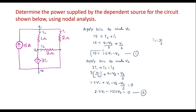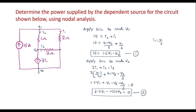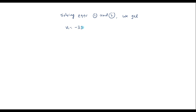Now we solve Equations 1 and 2 to get V1 and V2. These can be solved using Cramer's Rule or directly using a calculator. Using a calculator: V1 = −39.95V and V2 = −74.92V.